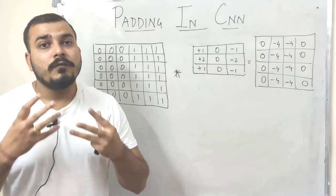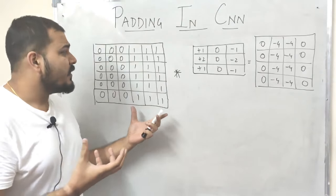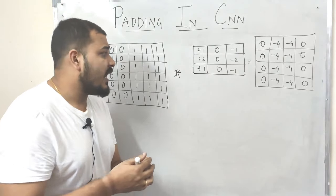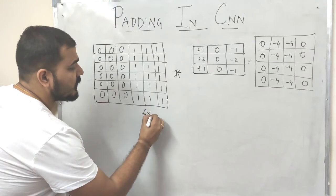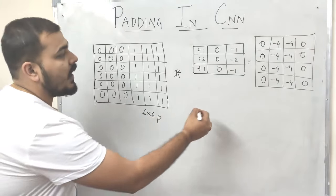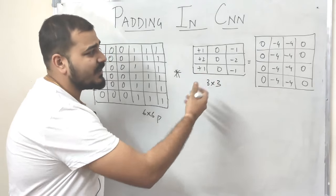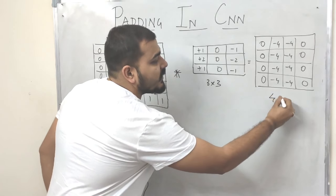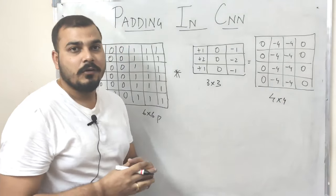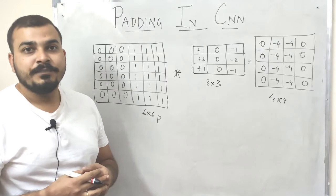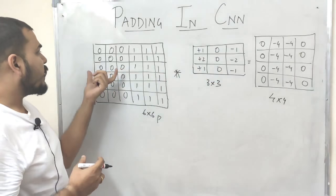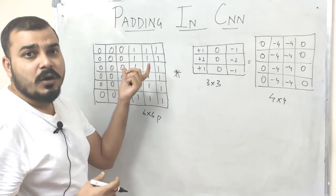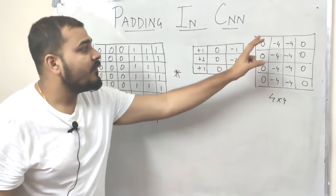In my previous video, I've already shown you how convolution operation takes place. Let me just revise a little bit. I took an example where I had an image which was basically six cross six pixels, and I was applying a vertical edge filter which is three cross three in size. The output I was getting was a four cross four pixels output. This convolving operation uses strides — we jump from one place to another, doing multiplication and summation to get the output.